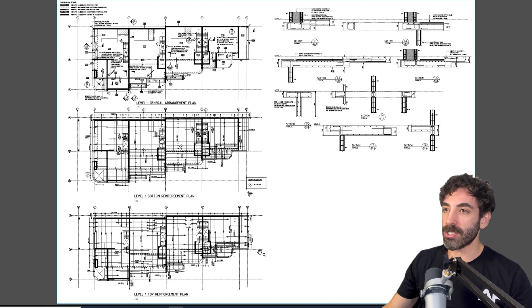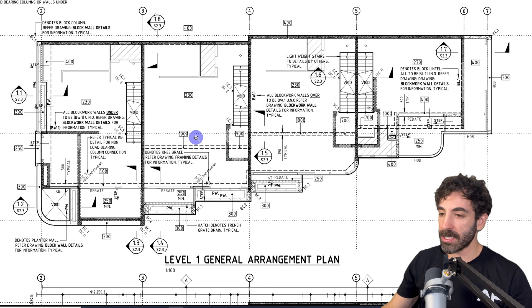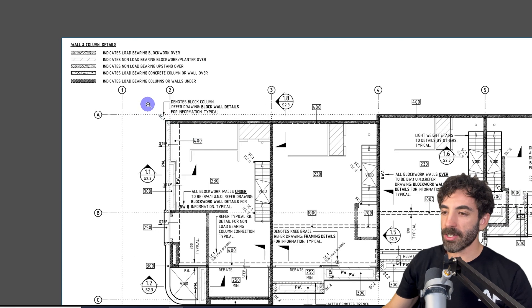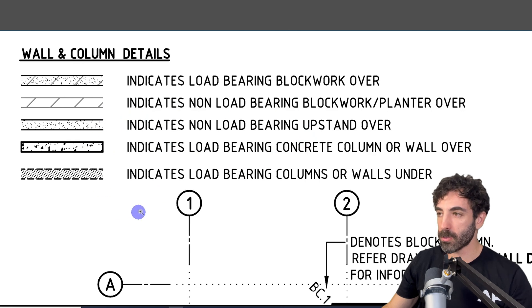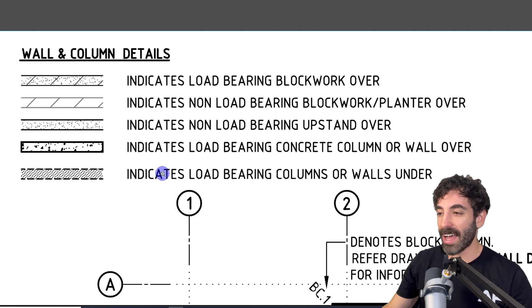The first plan we will look into is the Level 1 General Arrangement Plan. In the previous drawings we called it a slab profile plan — they're just different names but they convey the same details. The first thing I would familiarize myself with is the load bearing elements. You should be able to identify what members are supporting the slab and what members are loading it. There's a legend on the top left corner showing hatches for load bearing columns, walls under, walls over, and non-load bearing walls. If in doubt, you can align the drawings and move pages up and down to identify columns and walls below, above, and continuous.